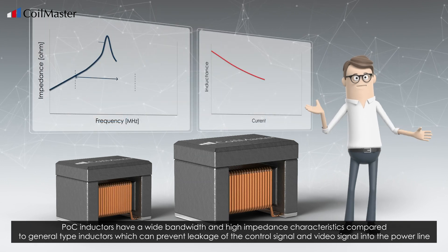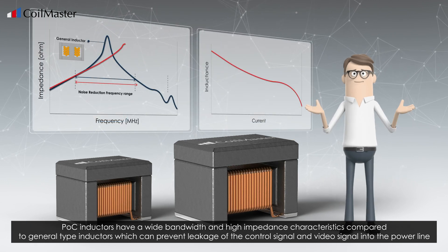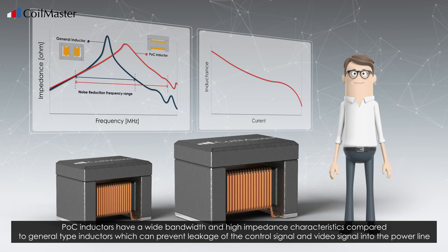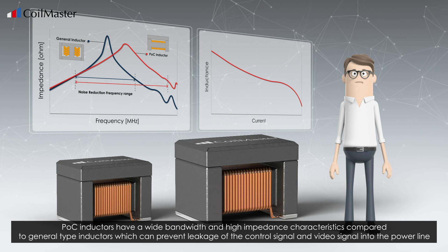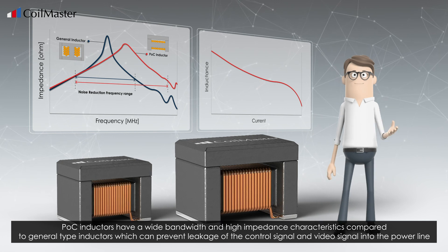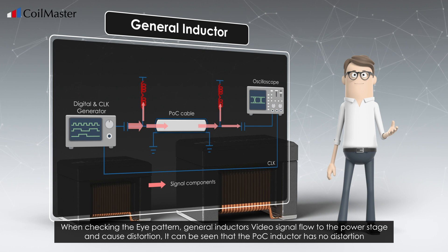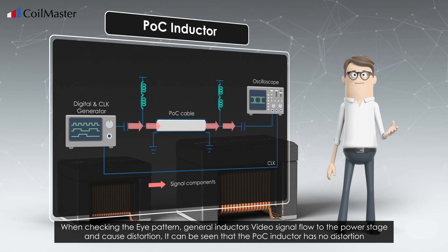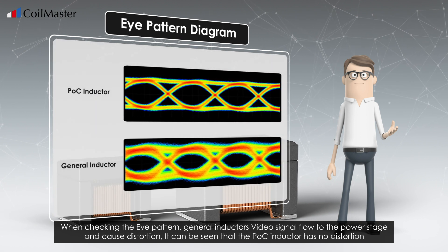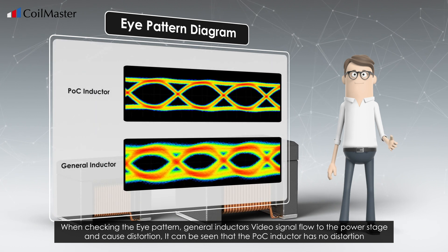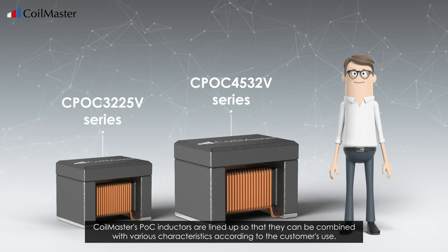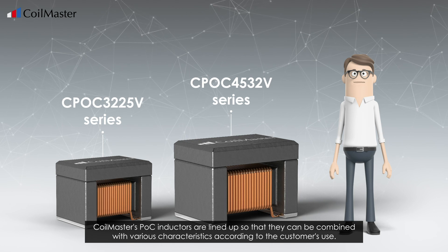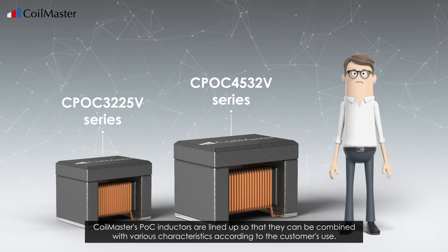POC inductors have wide bandwidth and high impedance characteristics compared to general type inductors, which can prevent leakage of the control signal and video signal into the power line. When checking the eye pattern, general inductors allow the video signal to flow to the power stage and cause distortion. It can be seen that the POC inductor has no distortion. Coil Master's POC inductors are lined up so that they can be combined with various characteristics according to the customer's use.